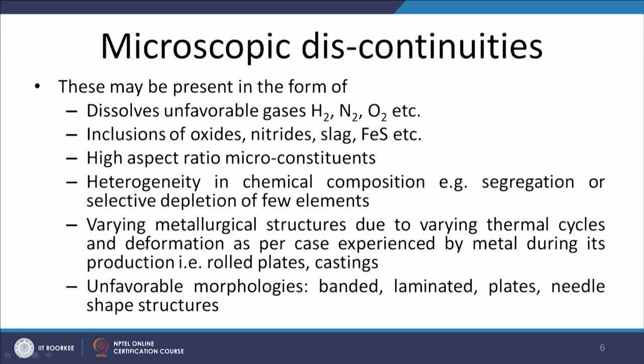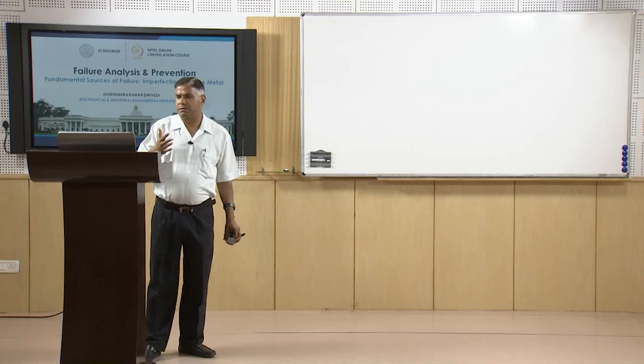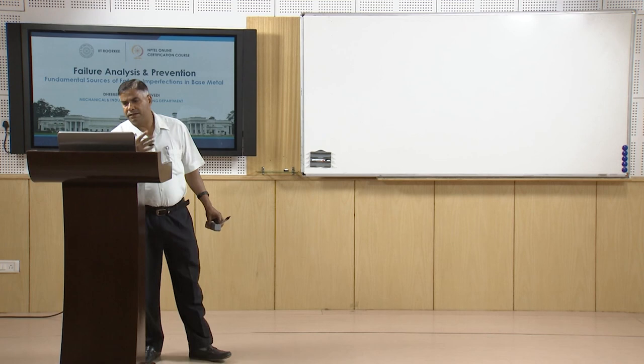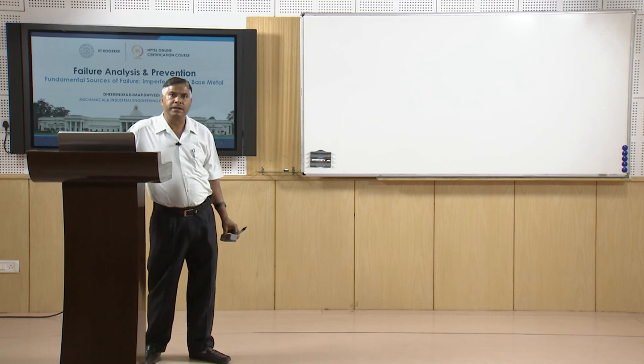Varying metallurgical structures due to different thermal cycles and deformations experienced during metal processing — such as rolling or casting — leads to heterogeneity in mechanical properties across the section, which under unfavourable service conditions can become a source of failure. Unfavourable morphologies — regarding size and shape of micro-constituents — such as banded structures, laminates, plates, or needles, provide easy sources for failure.